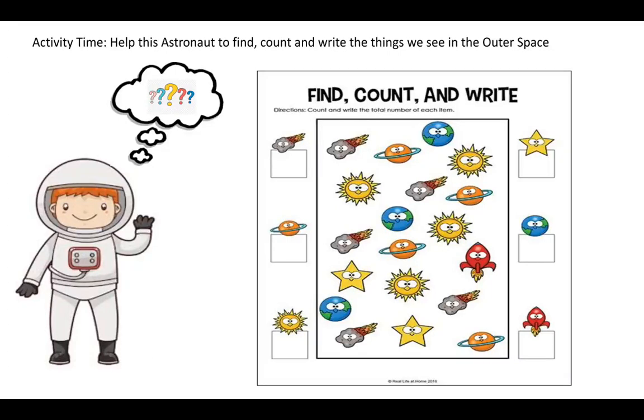Okay, kids, activity time. Did you see an astronaut here? Look at our friend astronaut. The activity is help this astronaut to find and count and write the things we see in the outer space. In your right side, you have here different things that we can see in the outer space, right? Like asteroids, planets, star, and sun. So, all you have to do is to, like for example, sun. How many suns do we have? Let us count. 1, 2, 3, 4. So, in the picture of the sun, you will write number 4. So, that activity is called find, count, and write.